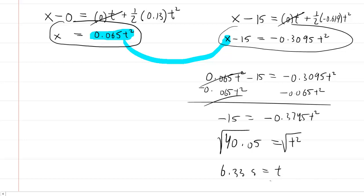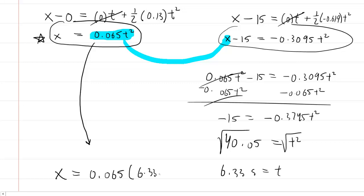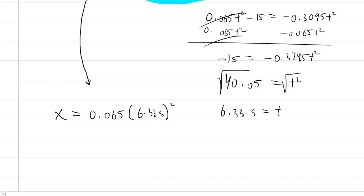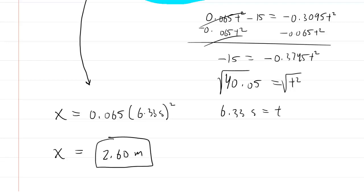We want the final x coordinate, so we go back to the girl's equation and plug in the time we just found: 0.065 times 6.33 squared. Working this out, we get a final x coordinate of 2.60 meters for both the girl and the sled. This is the correct answer to part C of the question.